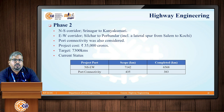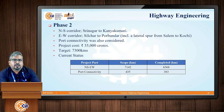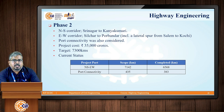The current status of Phase 2 shows that for the North-South to East-West corridor, the scope was around 7,142 kilometers, out of which 6,568 kilometers have already been completed. For port connectivity, the scope was set at 435 kilometers, out of which 383 kilometers have already been completed.